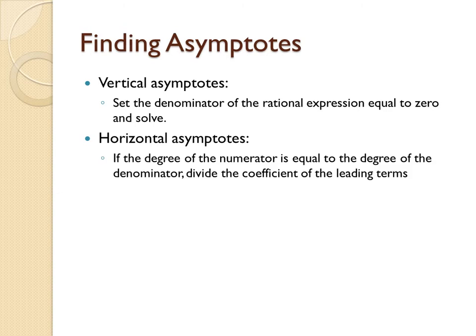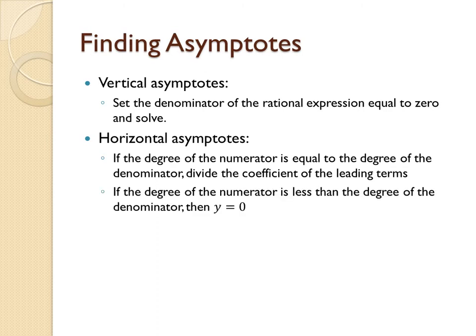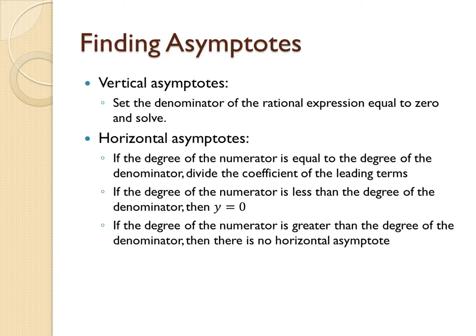If the degrees are equal, then you will simply divide the coefficients of the leading terms. If the degree of the numerator is less than the degree of the denominator, then your horizontal asymptote is 0. If the degree of the numerator is greater than the degree of the denominator, then there is no horizontal asymptote.